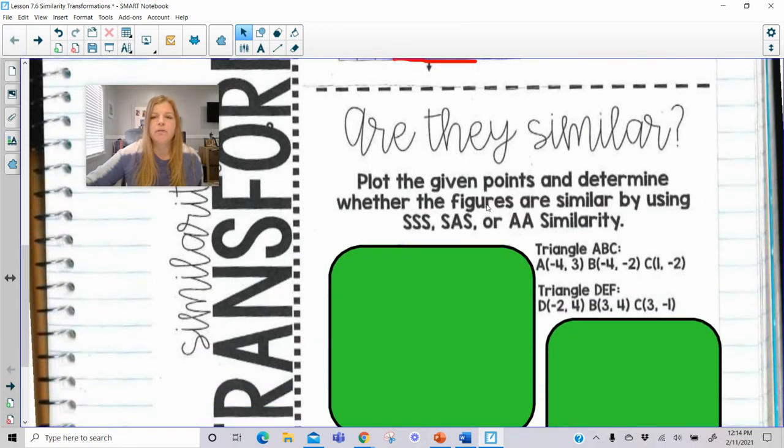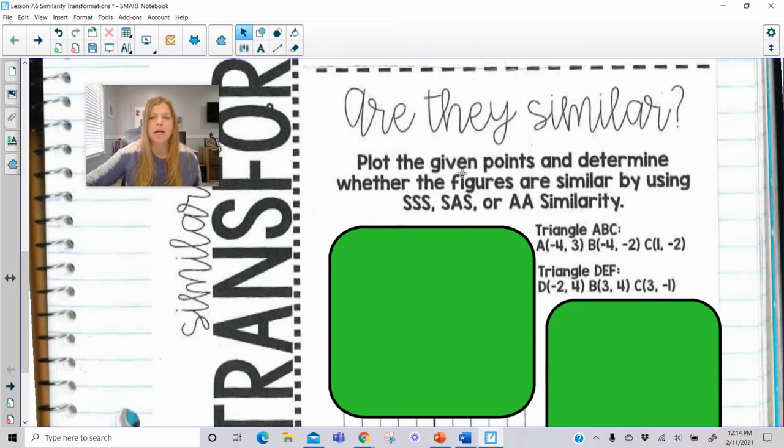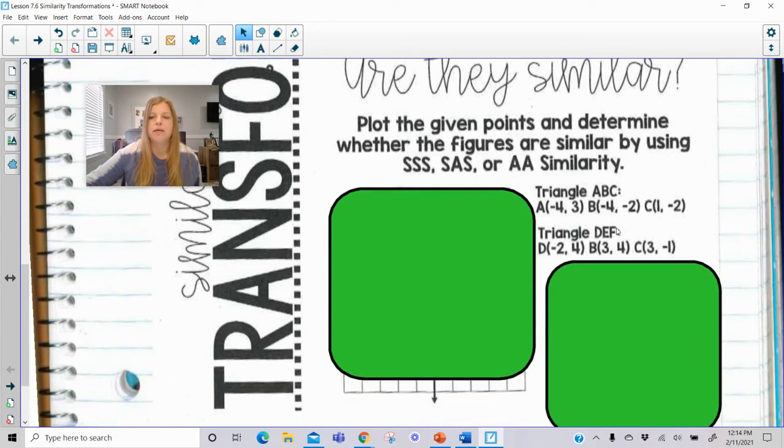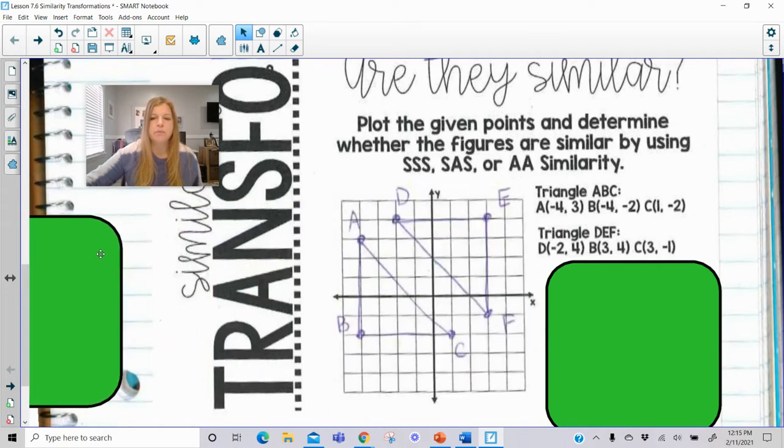The second part of this is, are they similar? Plot the given points and determine whether the figures are similar by using SSS, SAS, or angle angle similarity. So if I plot this triangle ABC at points (-4, 3), (-4, -2), and (1, -2), and then I plot these points for triangle DEF, this is what I end up getting. And I can prove whether or not these are similar in many different ways. I can prove by two angles, I can definitely figure it out by side, side, side, finding the lengths of all three sides and seeing are they proportional to each other, or side angle side, finding two sides and the included angle.